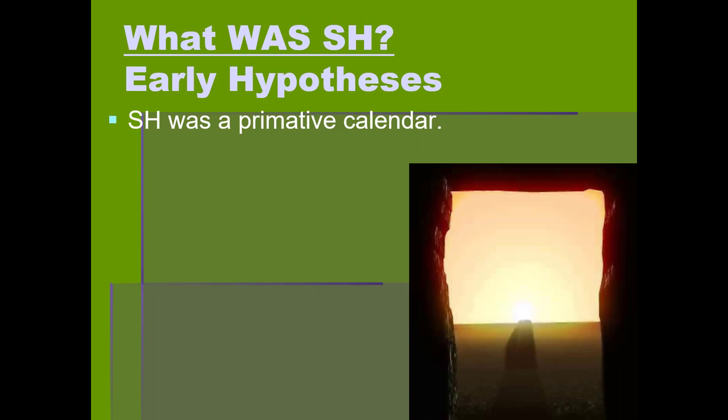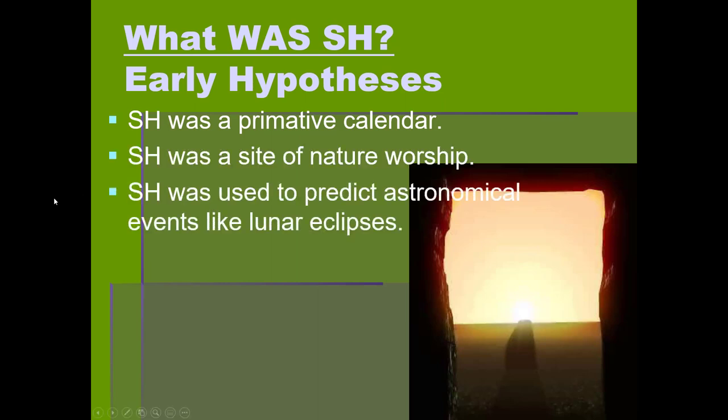There have been hypotheses about the use of Stonehenge for centuries, varying depending on time period and interpretation. Since Stonehenge was used for over 1,500 years, it very likely had more than one purpose over that time. Because the sun rises above the Heelstone on June 21st, early archaeologists argued that Stonehenge could have been used as a primitive calendar, and also as a site of nature worship since everything was oriented towards the rising of the sun on the longest day of the year.